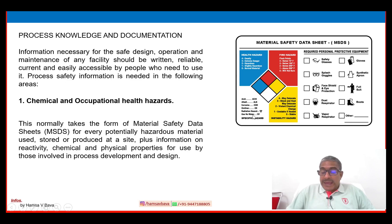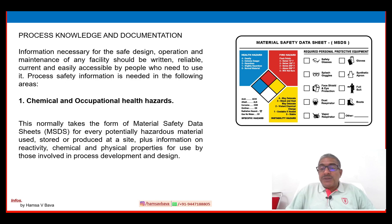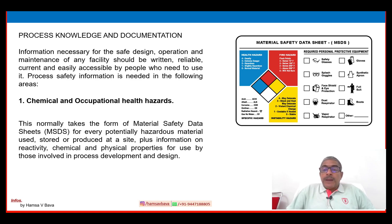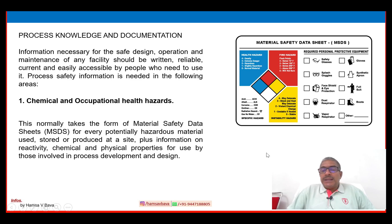The MSDS must mention what are the health hazards, fire hazards, reactivity, and what personal protective equipment to use. It also includes where the material is manufactured, what it is, the expiry date, emergency contact numbers, and what precautions to take. So many pieces of information are required in the MSDS — especially in the specialty chemical industry, the MSDS is a mandatory required document for chemical and occupational health hazard.